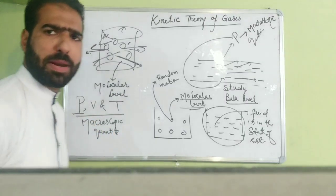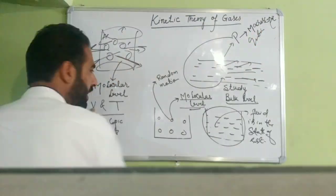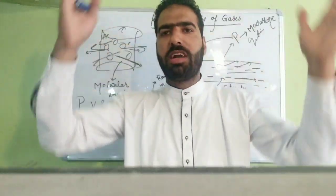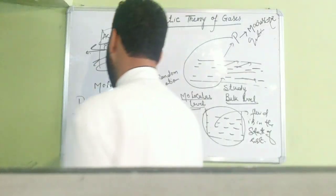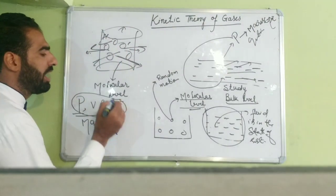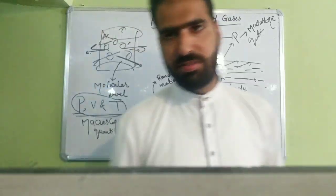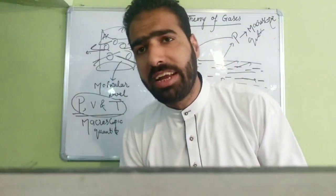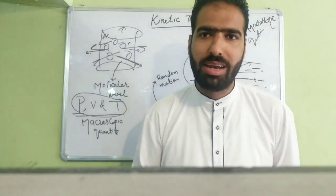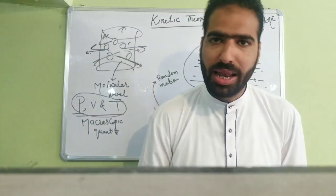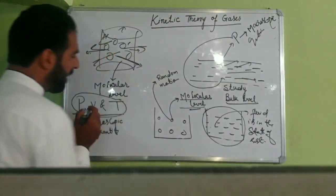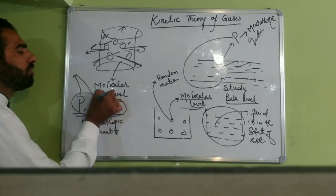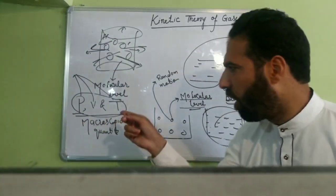In thermodynamics you have three indicated variables: pressure, volume, temperature — they are called macroscopic quantities. Pressure P is measured at the bulk level; volume is a bulk quantity measured at the bulk level; temperature T is measured at the bulk level. So thermodynamics studies a gas or a system — we study heat, we study energy, we see energy changes — but at the bulk level.